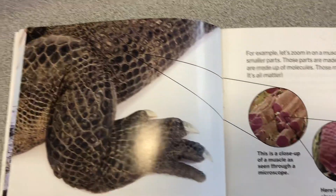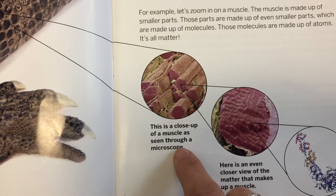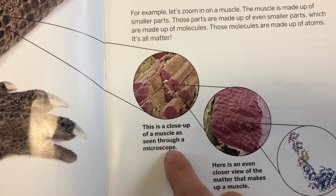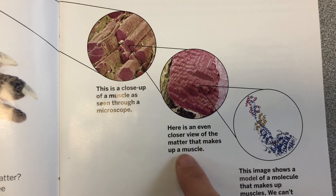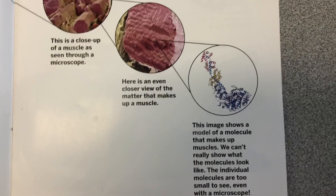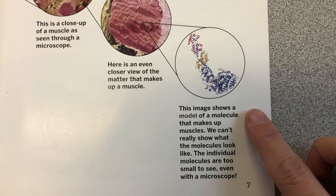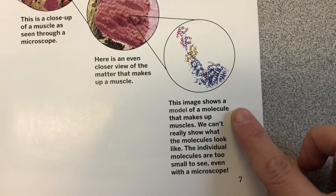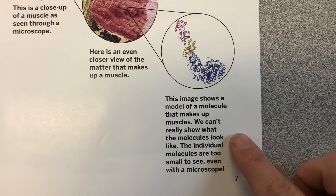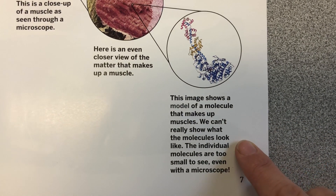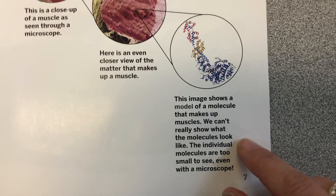Here's the alligator. This is a close-up of muscles as seen through a microscope. Here is an even closer view of the matter that makes up a muscle. This image shows a model of a molecule that makes up muscles. We can't really show what the molecules look like — the individual molecules are too small to see, even with a microscope.